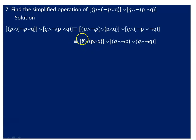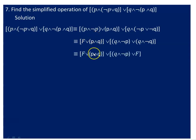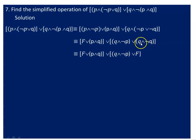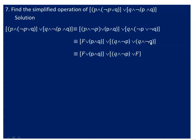This results in false or false, which is false. Applying the identity property, false or true is true, and false remains false. With total values evaluated, P and negation P is false, and Q and negation Q is false.